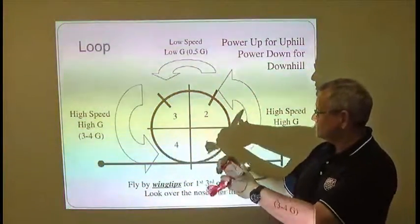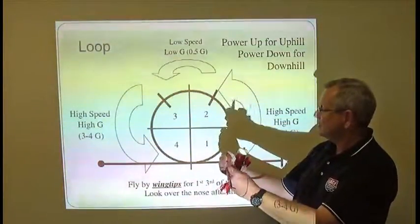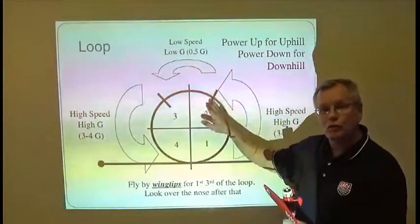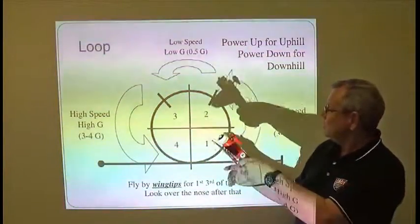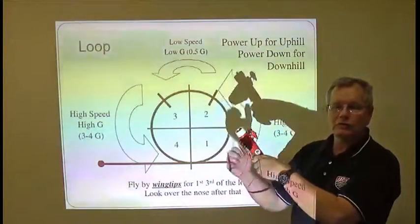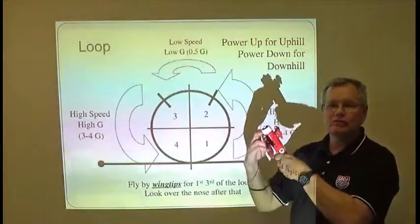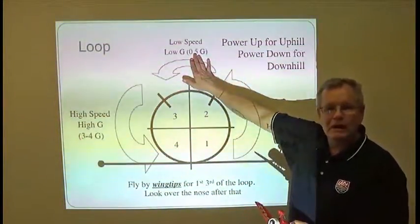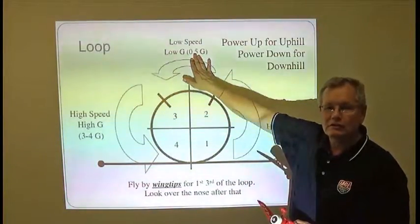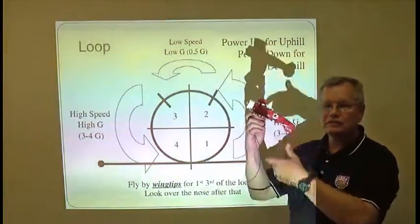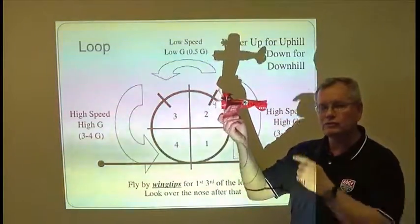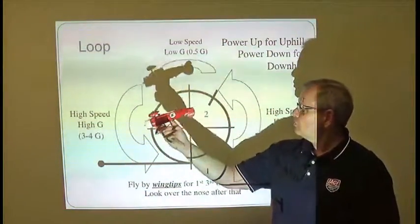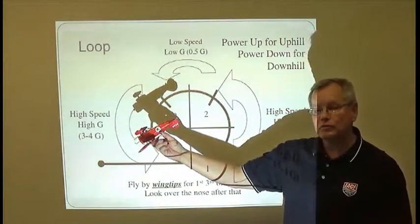As you pull into this and you're pulling three to four Gs here, then you need to keep rounding this loop out until about the middle of quarter number two. Now here is where you're going to start easing off the stick and trying to float over the top. You still want to maintain probably about a half a G of positive G, so even though you feel light in the seat as you're going over the top, the blood is still going to your feet, not to your head. You're going to float that all the way over here until about the middle of quarter number three.